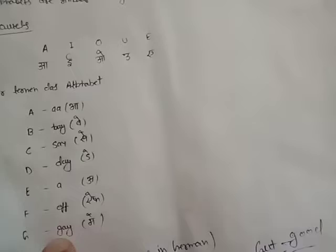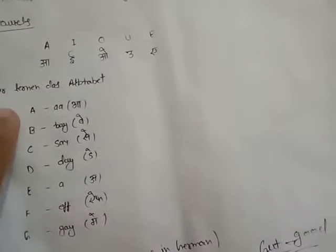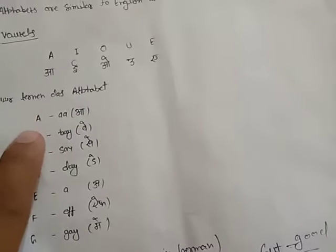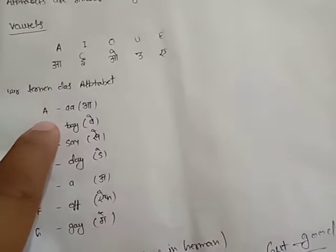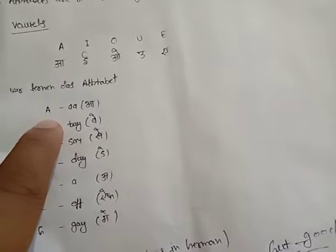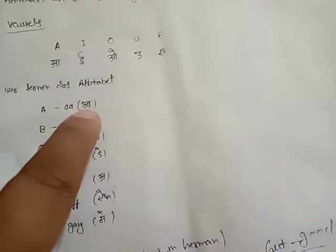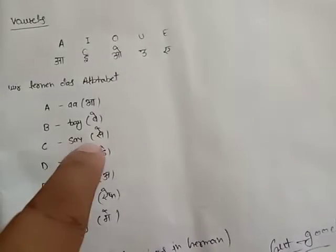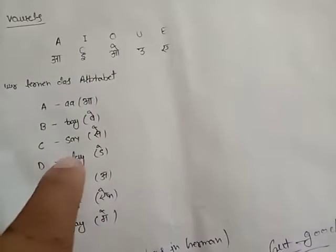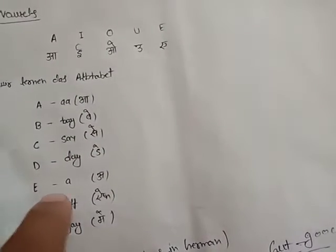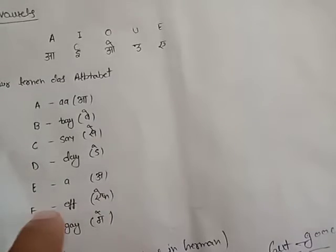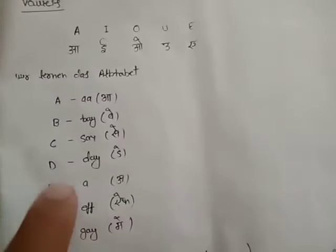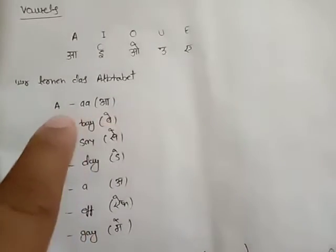There is the name of the letters in German, just like English. It will be written like A, but you will pronounce it as 'aa'. Similarly, B is 'bay', C is 'say', D is 'day', E is like 'a' in Hindi, F is just 'ef', and G is 'gay'.